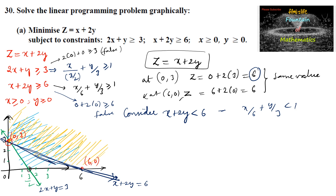The origin satisfies x + 2y < 6 since 0 + 2(0) = 0 < 6 is true. However, the shaded region of x + 2y < 6 and our feasible solution region do not intersect — there is no common point. Therefore, z cannot be less than 6 within the feasible region.